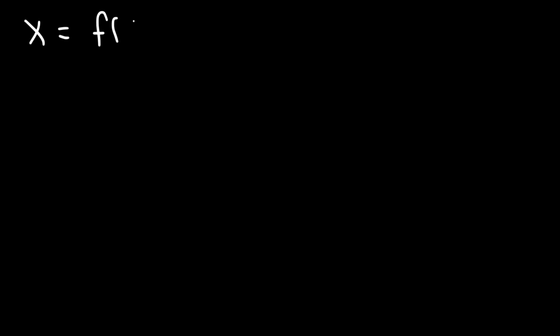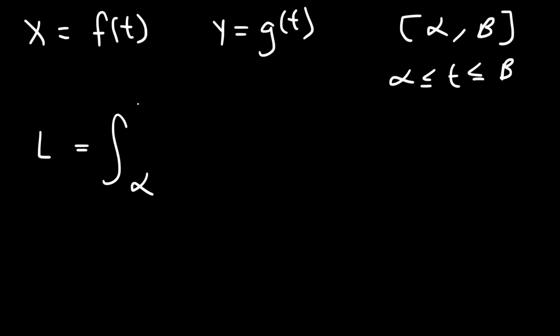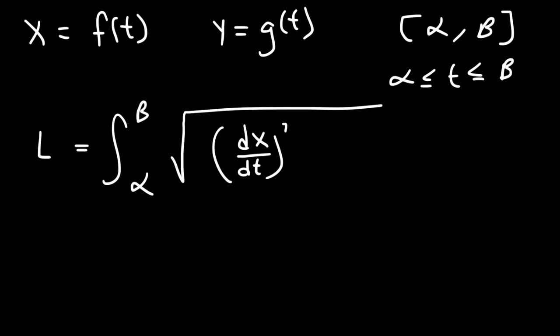In this video we're going to talk about how to find the arc length of a parametric function. So let's say that x is a function of t and also that y is a function of t. Let's say that f prime and g prime are continuous on the interval alpha to beta, where t is restricted between alpha and beta. Another requirement is that the curve can only be traversed once as t increases. So if those conditions are met, then the arc length is the integral from alpha to beta of the square root of dx/dt squared plus dy/dt squared.